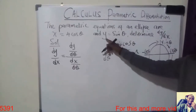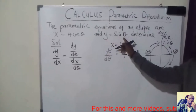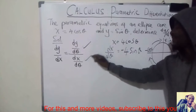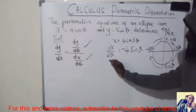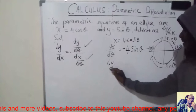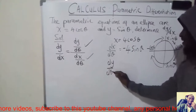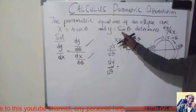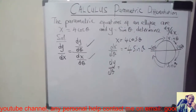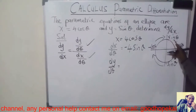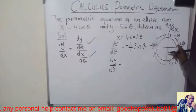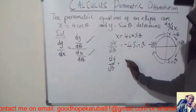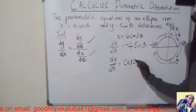Now we find dy over d theta. We are differentiating y equals sin theta. Going in the clockwise direction on the circle, the derivative of sin theta gives cos theta. So dy over d theta is equal to cos theta.